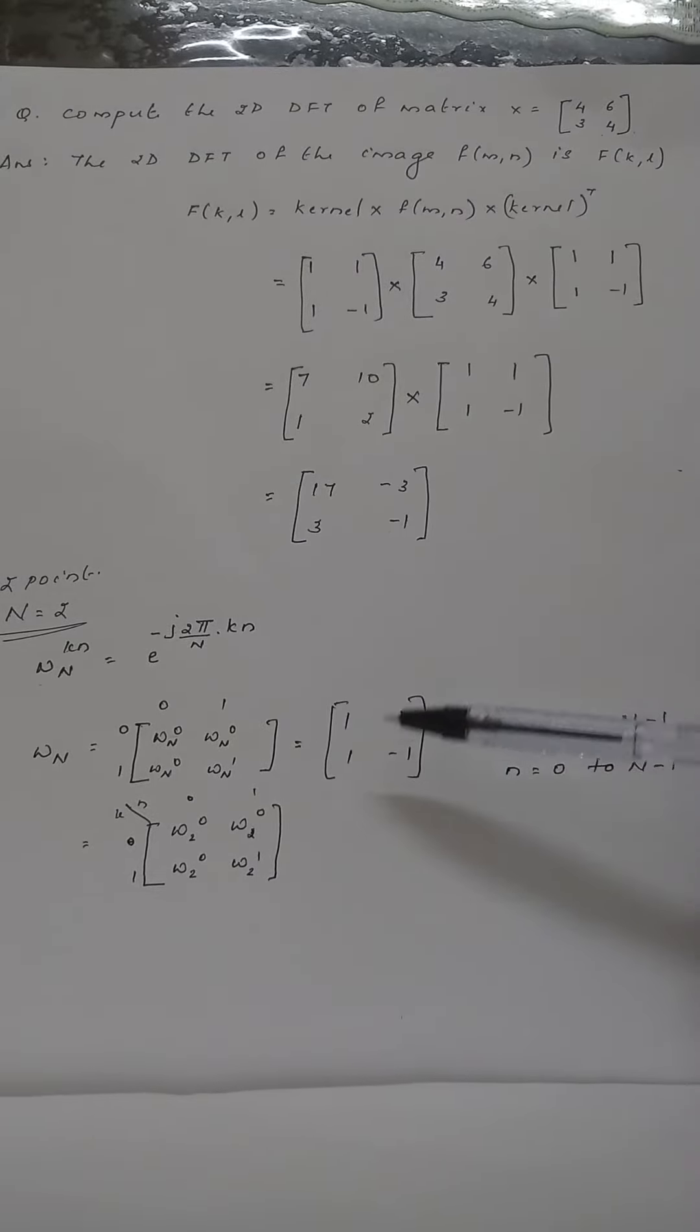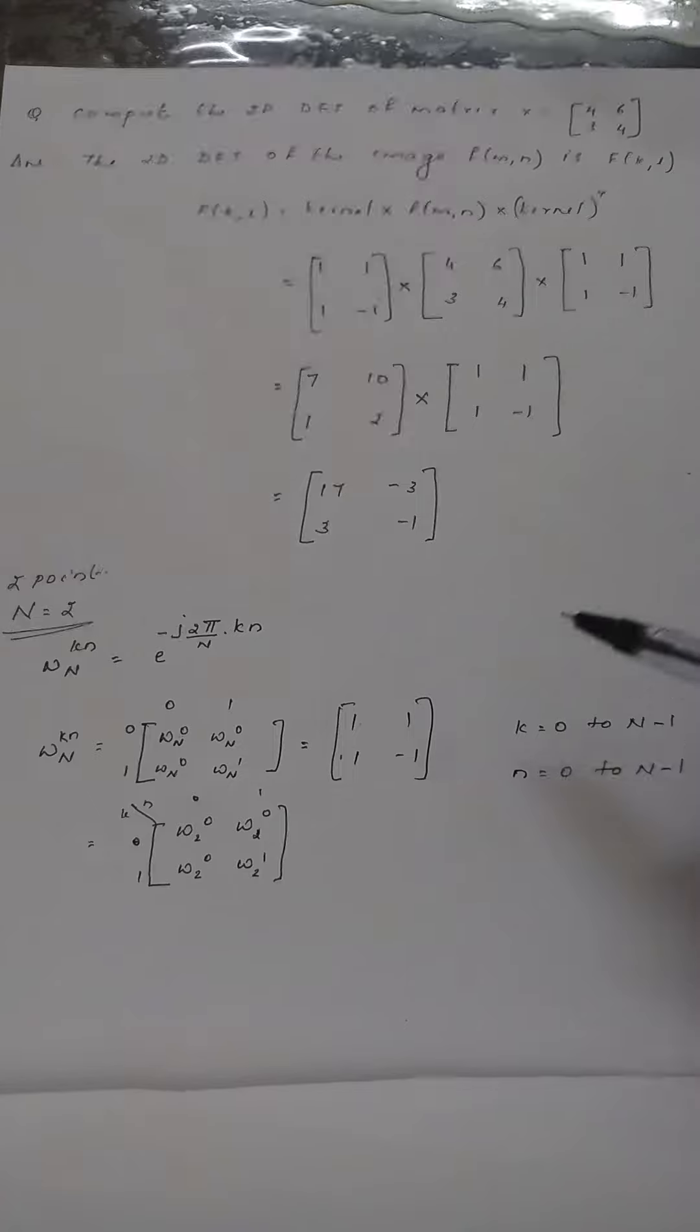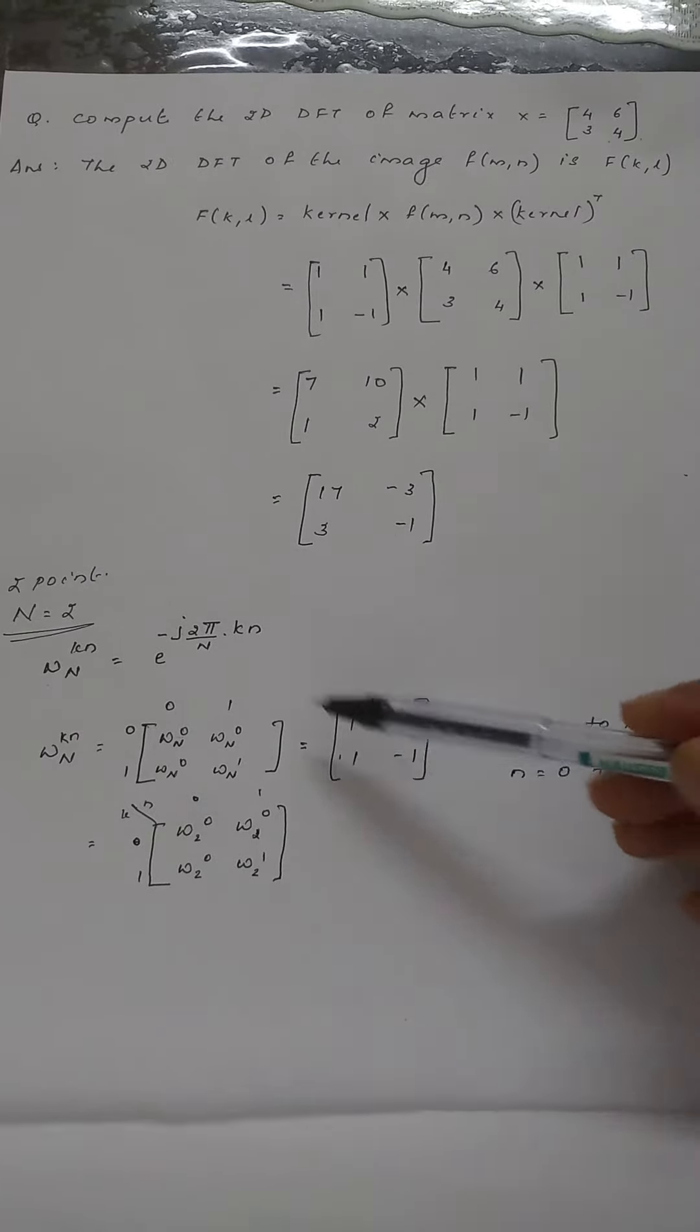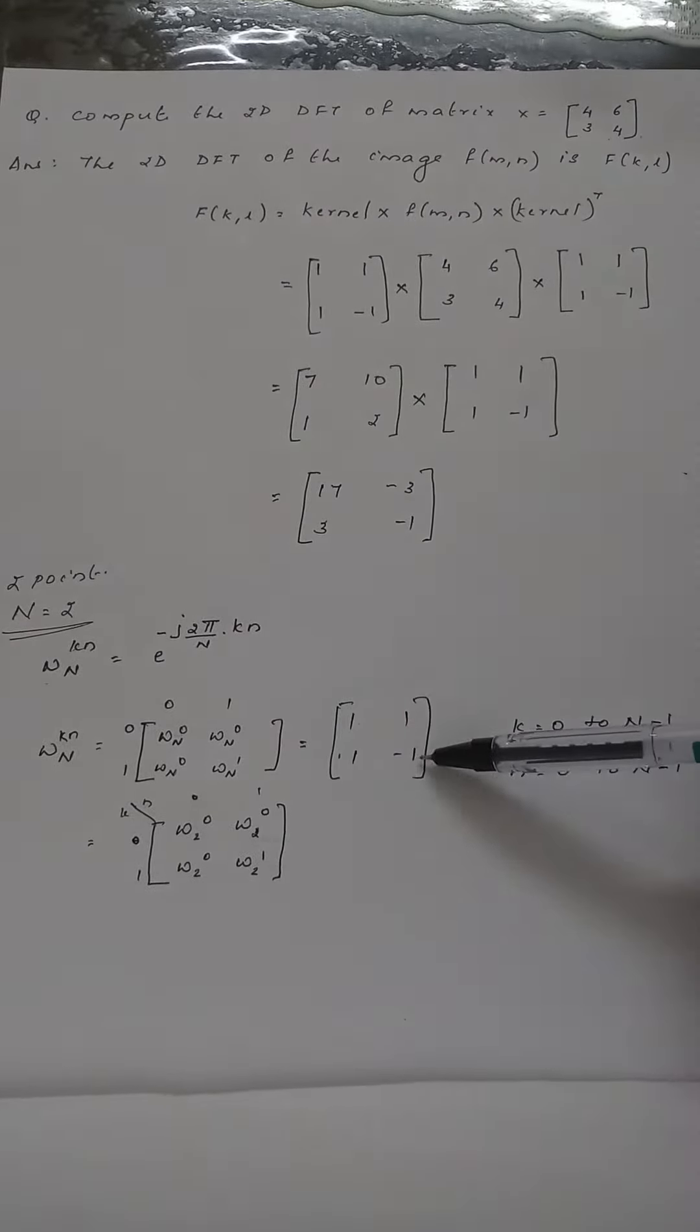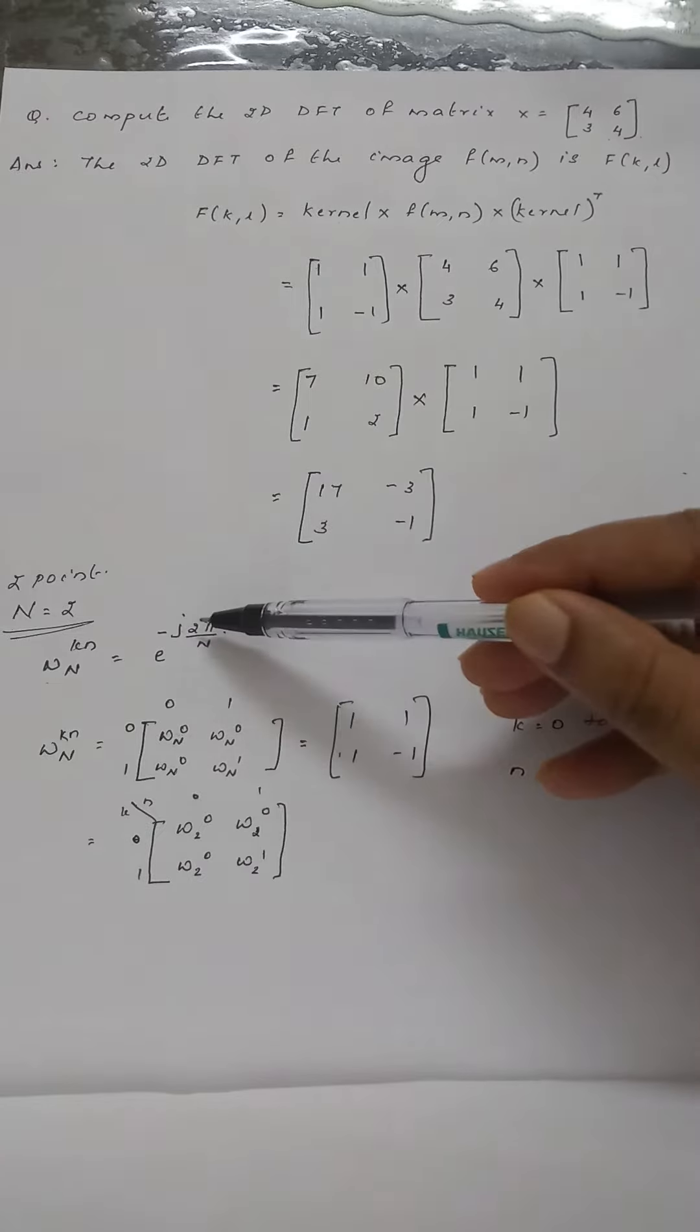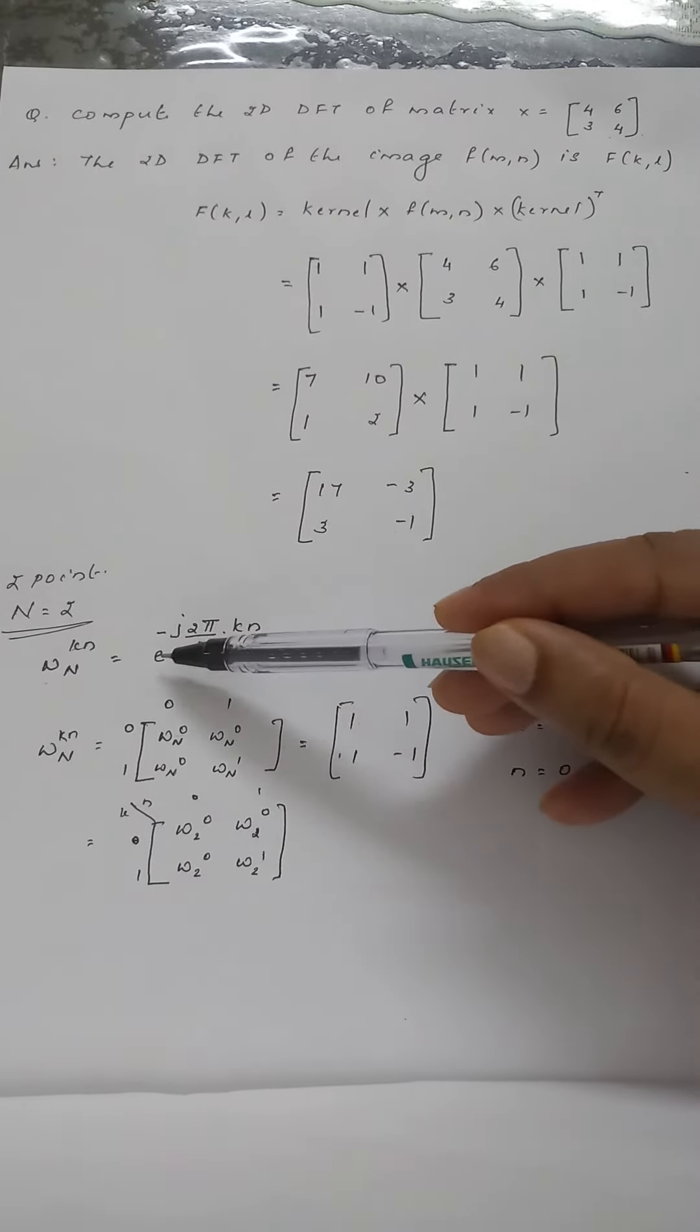Now we find its value by substituting n equals 2. For k times n equals 0, we get 1. So we get [1 1; 1 ?]. The other value is e raised to minus j 2π/2 times 1, where the 2s cancel.